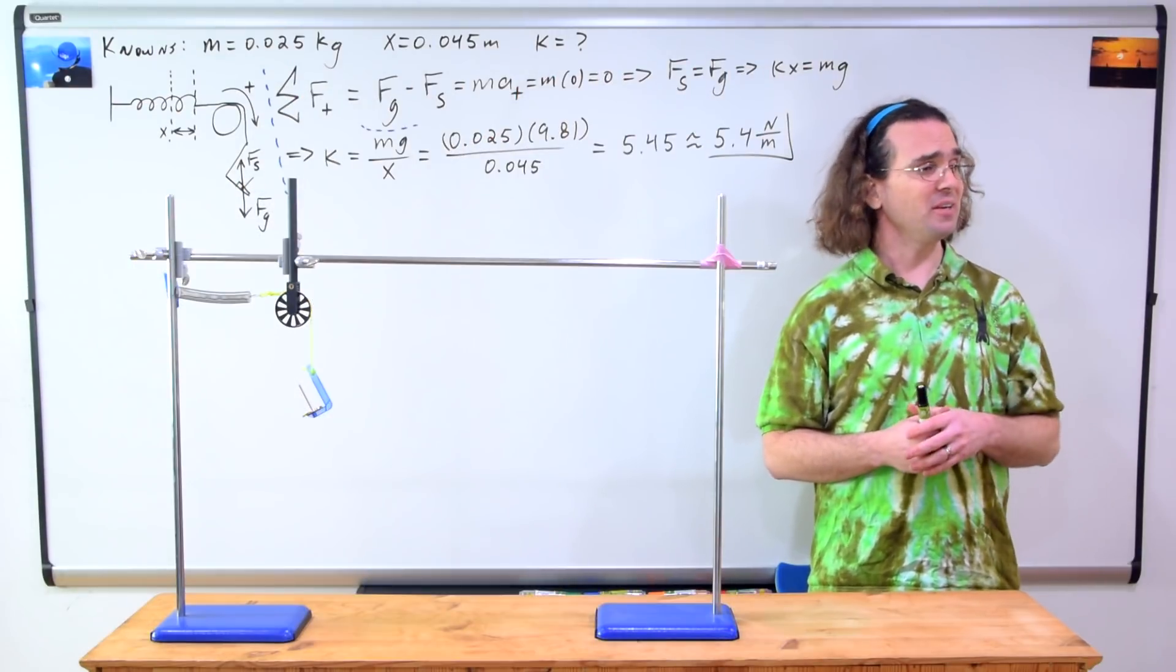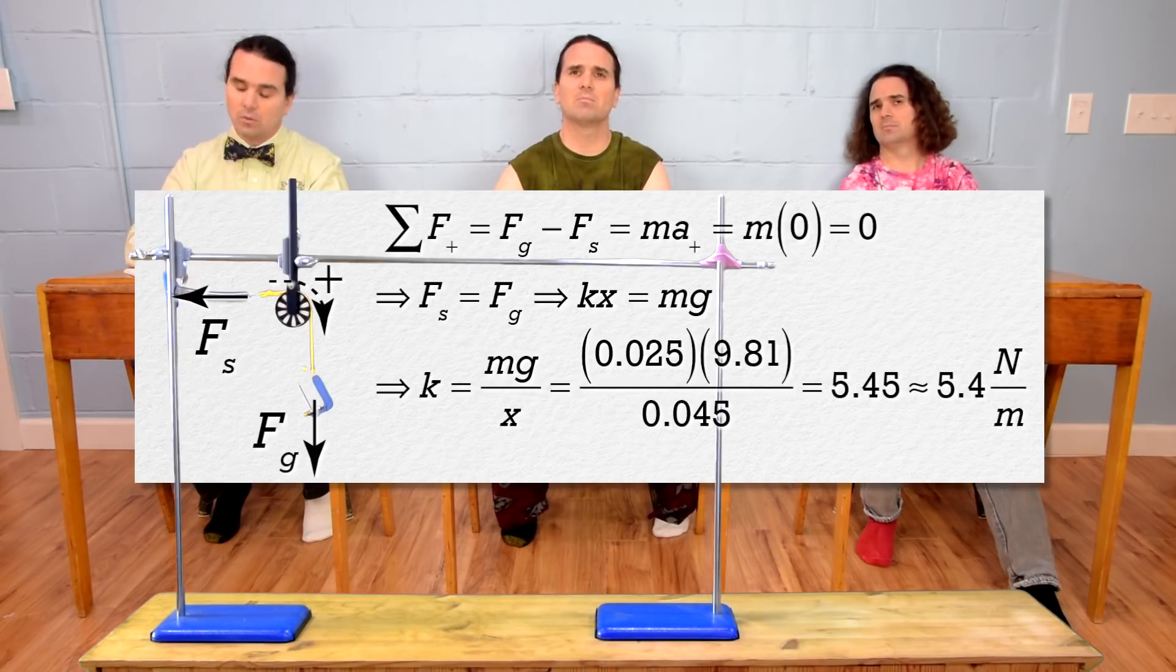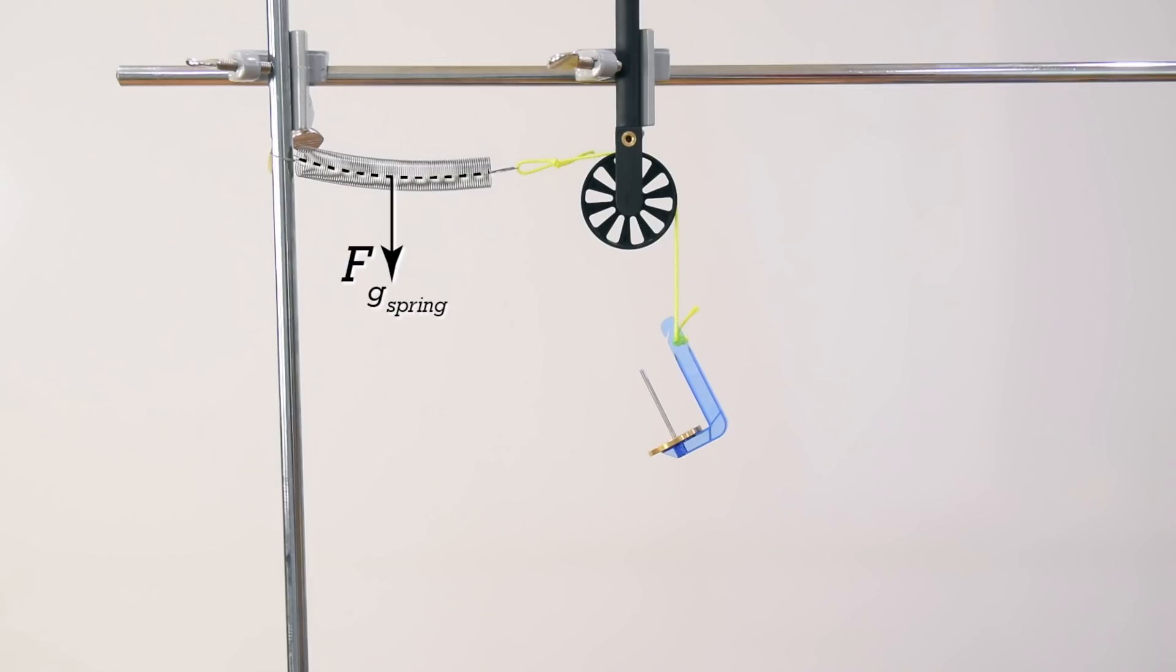Very nice, Billy. Isn't there a force of gravity acting down on the spring? That should be in the free body diagram, right? Actually, the force of gravity acting down on the spring just causes the spring to curve slightly. It does not really pull the spring in the direction of the chord, so we do not really need it in the free body diagram.